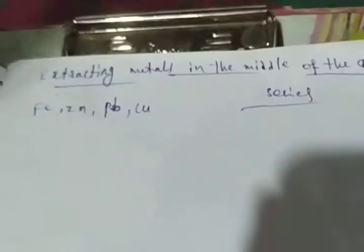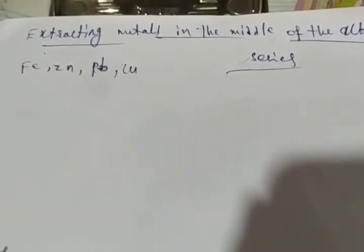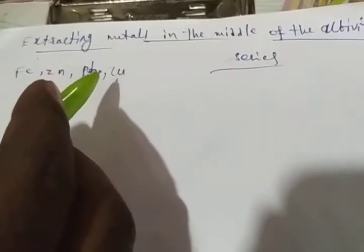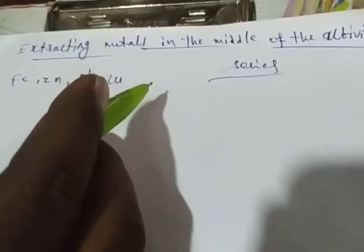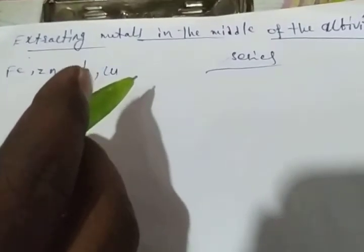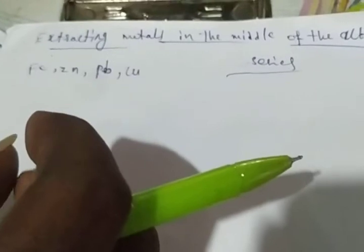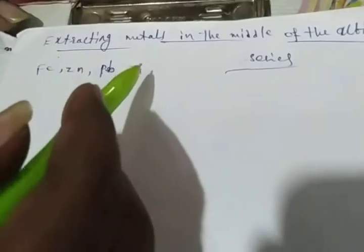The metals in the middle of the activity series, such as iron, zinc, lead, and copper, are moderately reactive. These are usually present as sulfides or carbonates in nature. It is easier to obtain a metal from its oxide compared to its sulfides and carbonates — we can obtain the pure metal from the metal oxide more easily.